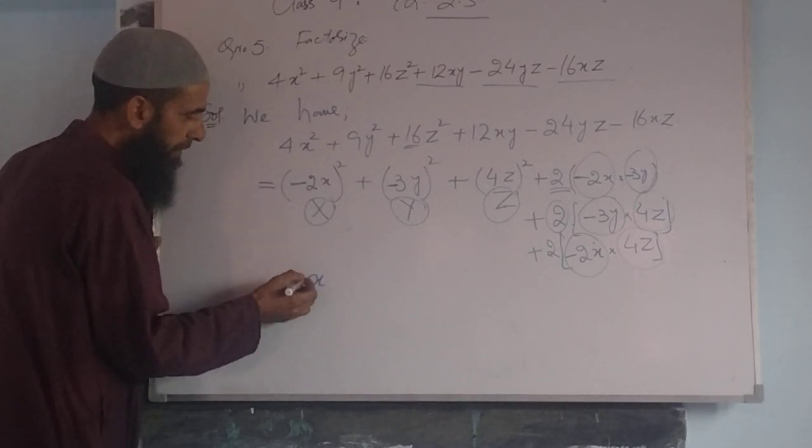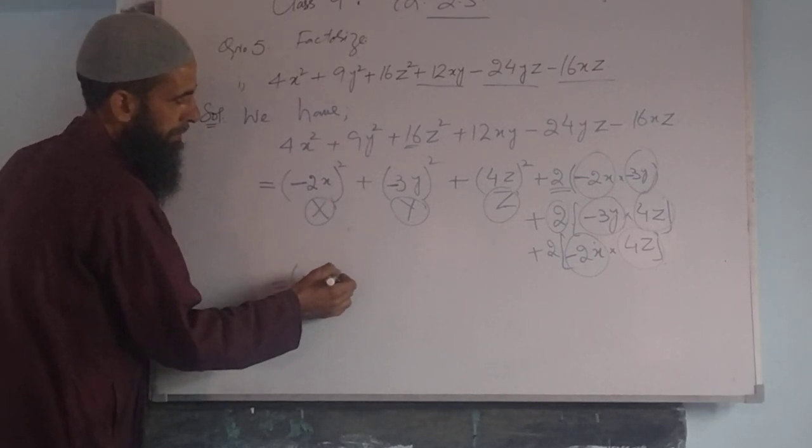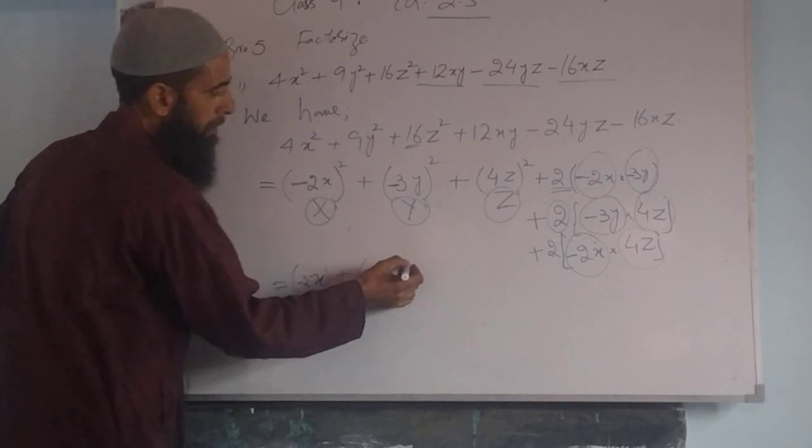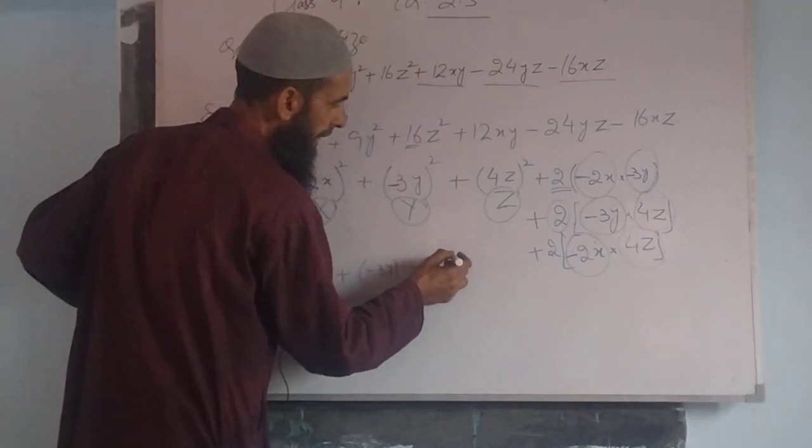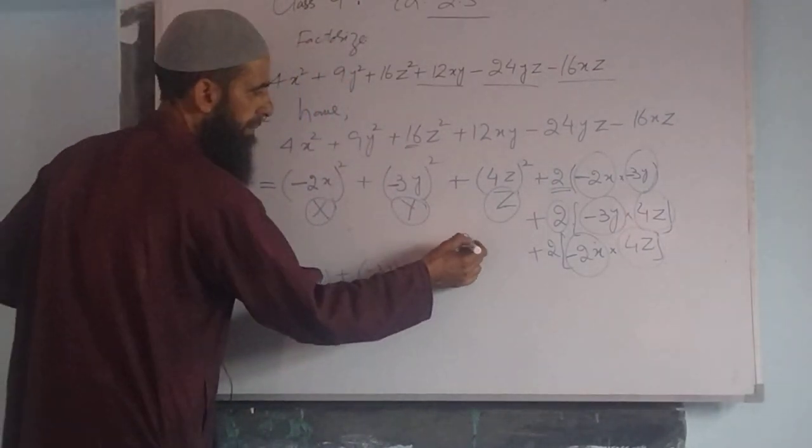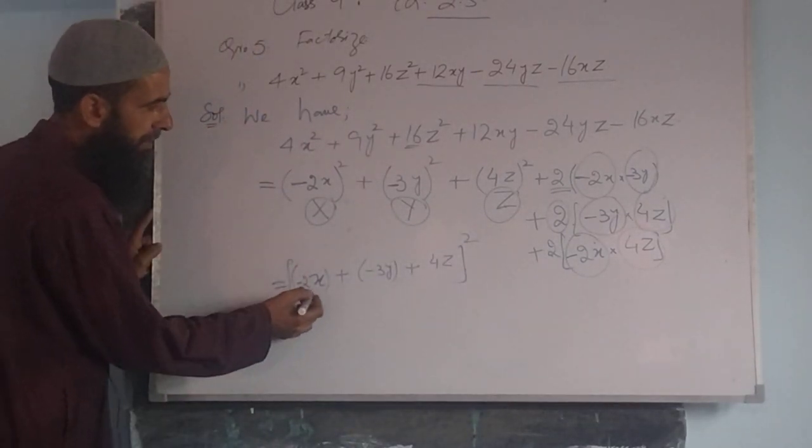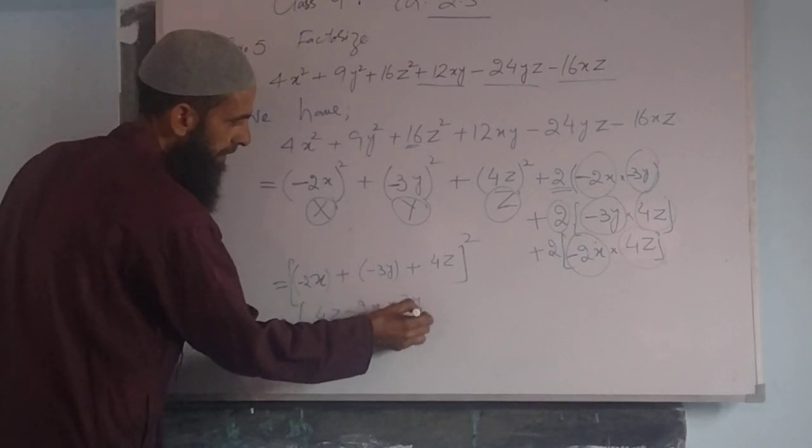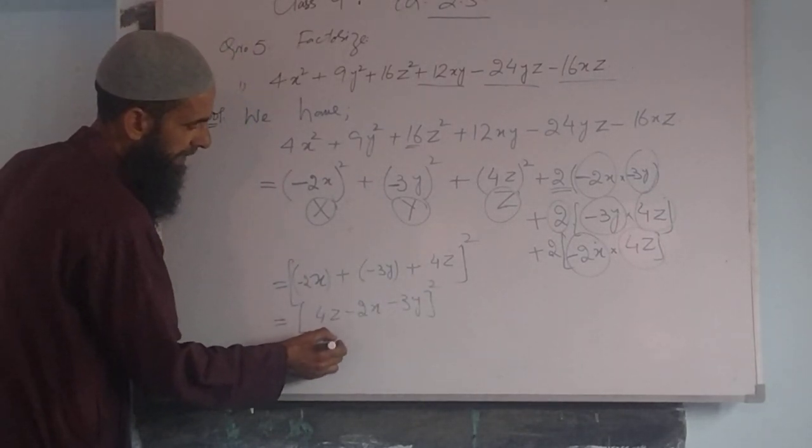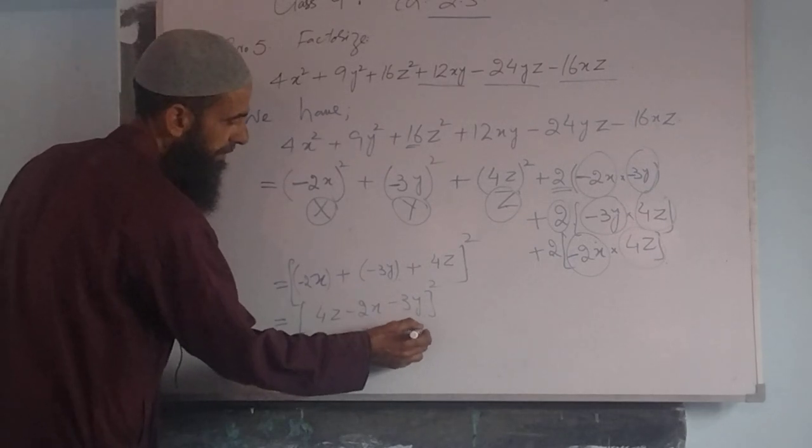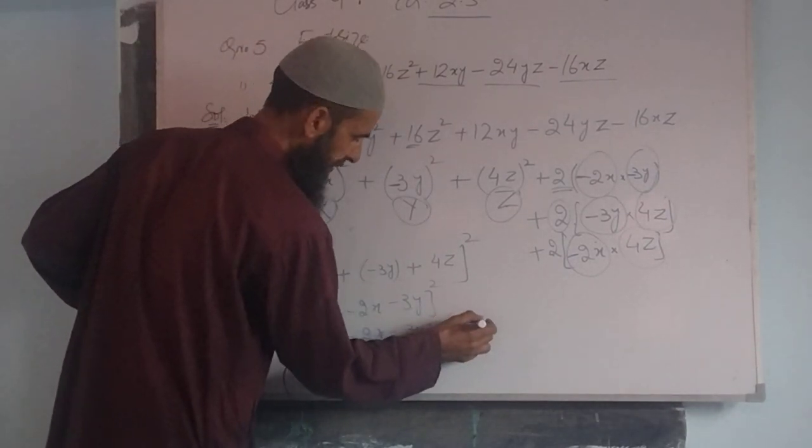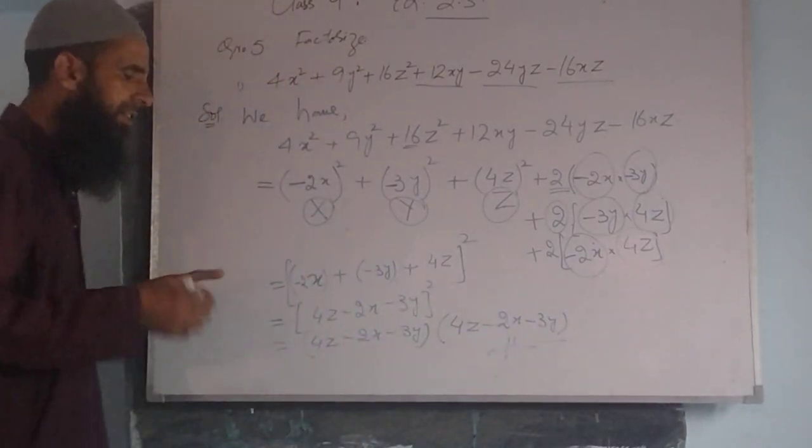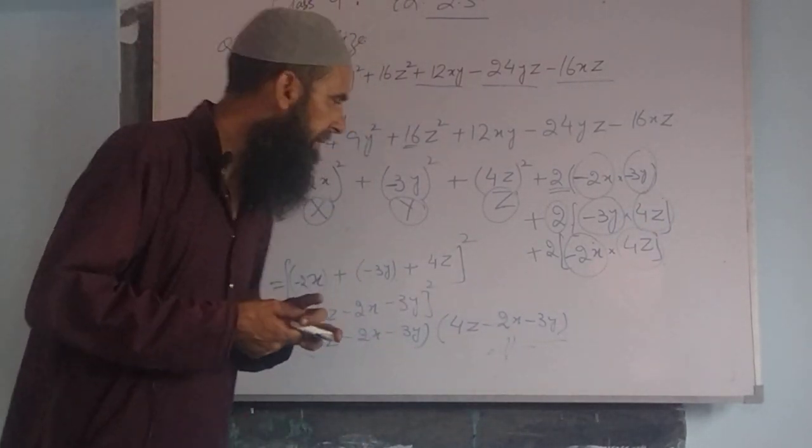This x value is minus 2x, plus y is minus 3y, plus z is 4z. The whole square: (4z - 2x - 3y)². This can be written as (4z - 2x - 3y)(4z - 2x - 3y). These are the required factors of this given polynomial which is in three variables.